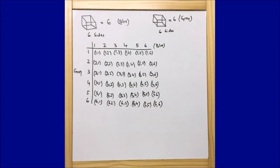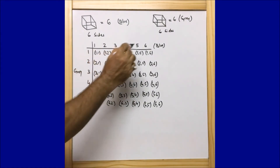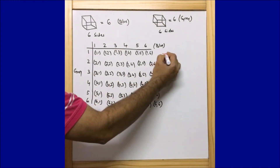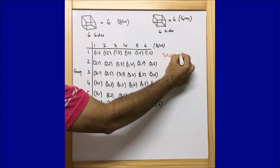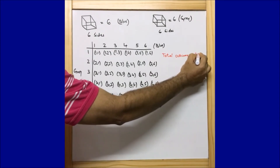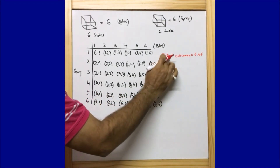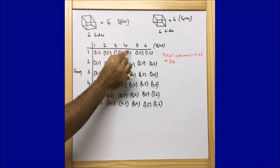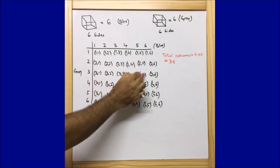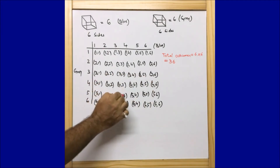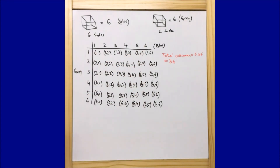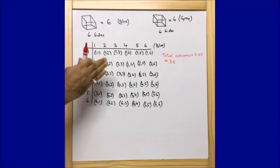So guys, this is what the question asked us to write down — all the possible outcomes. The total number of possible outcomes we are getting is equal to 36. If you count them you will get 36, because six into six is nothing but 36. These are the combinations you might get if you throw two dice simultaneously.